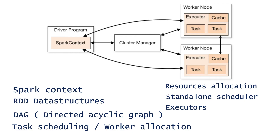Once execution gets started, the executors have two jobs to do. The first job is to run the tasks assigned by the driver program, and then they have to report those statuses back to the driver program. These are the exact workflow steps of the Apache Spark architecture. If I missed anything or explained incorrectly, please comment below so everyone can understand better. Thanks for watching — see you next week.